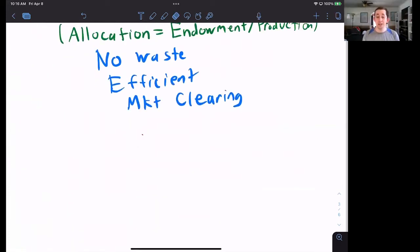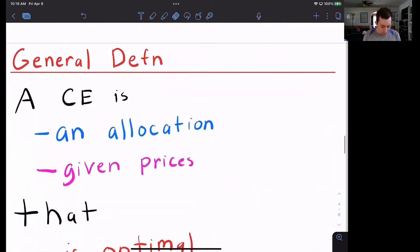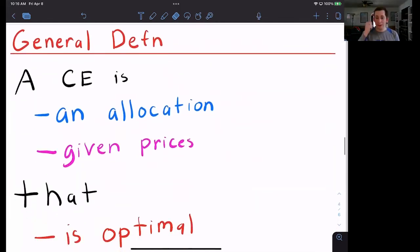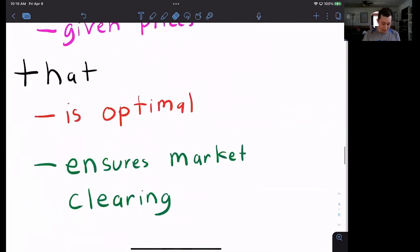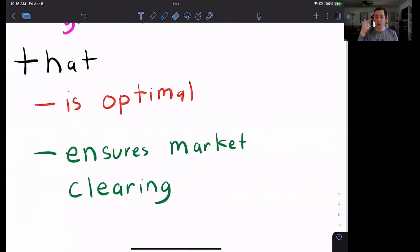Now let's go into a general definition of competitive equilibrium. A competitive equilibrium is an allocation given prices. What does it need to do? It needs to be optimal and it needs to ensure market clearing, that no-waste condition we talked about earlier, and solving or maximizing the objective functions of the agents.